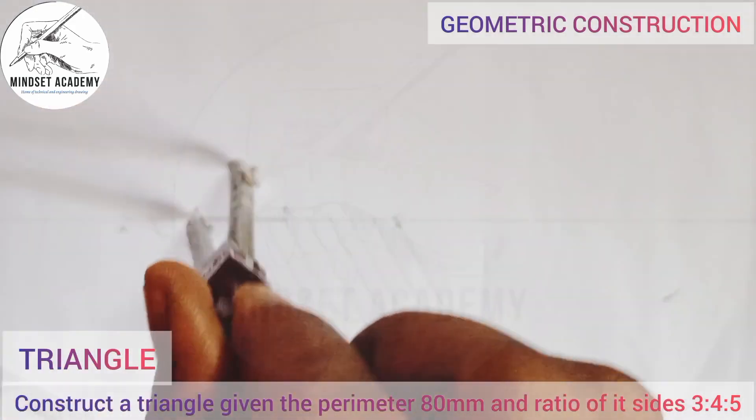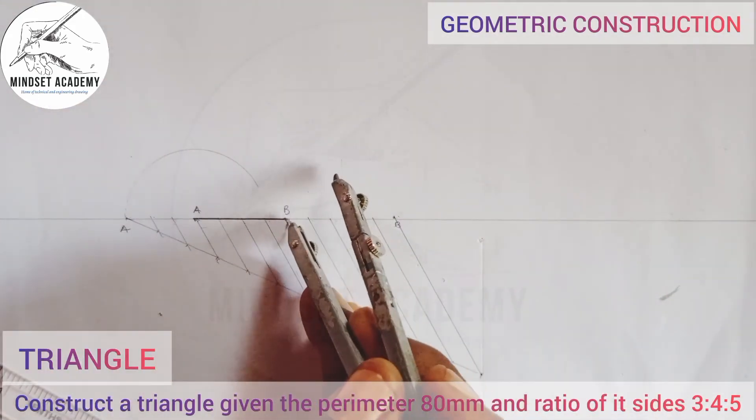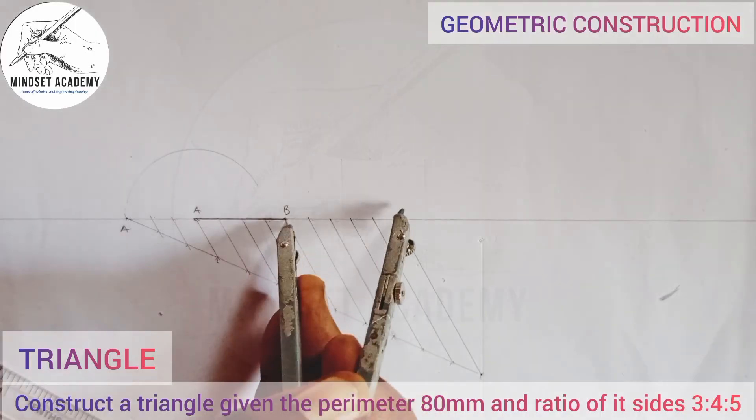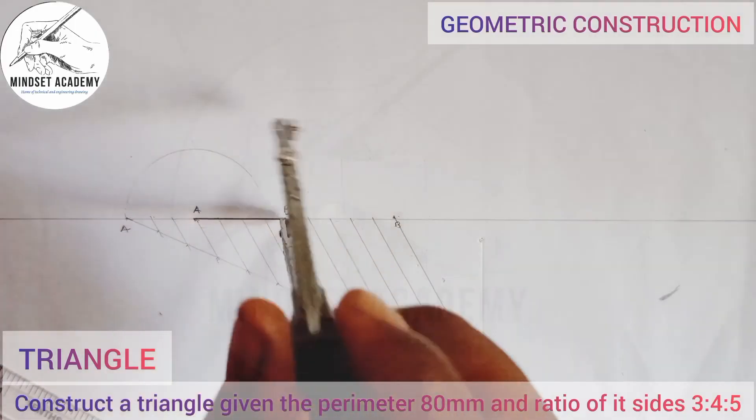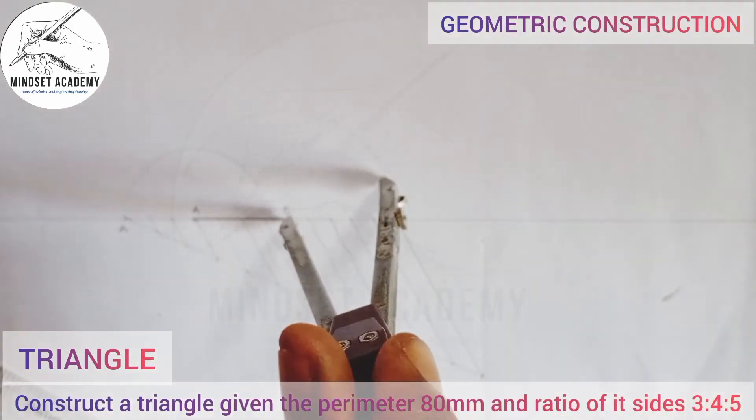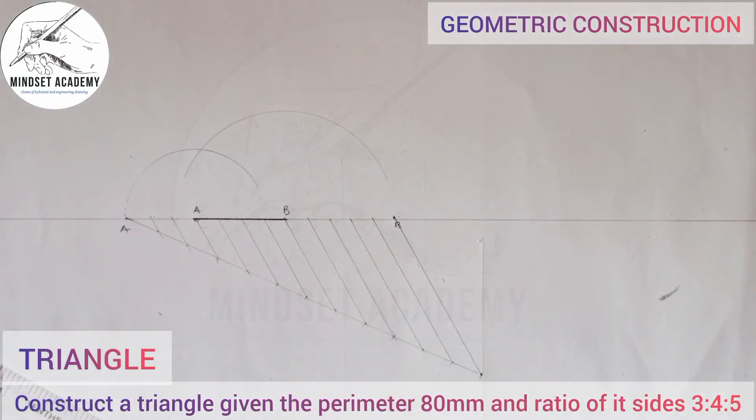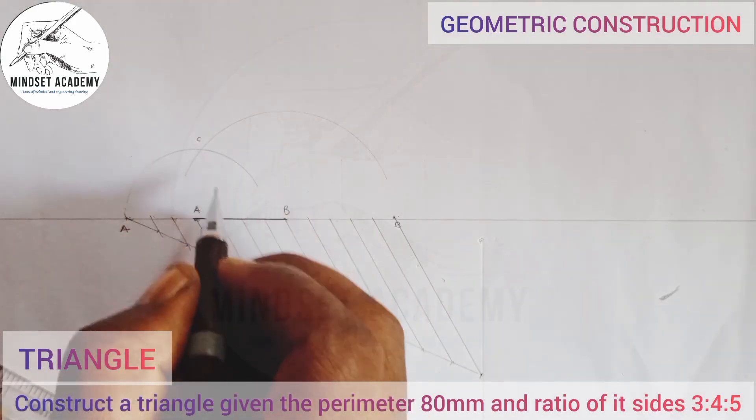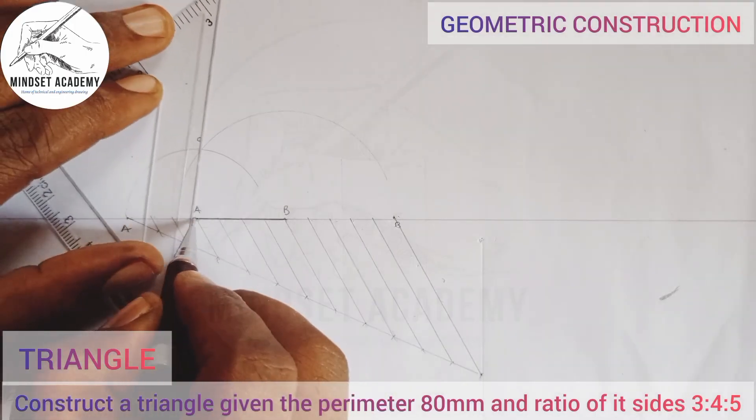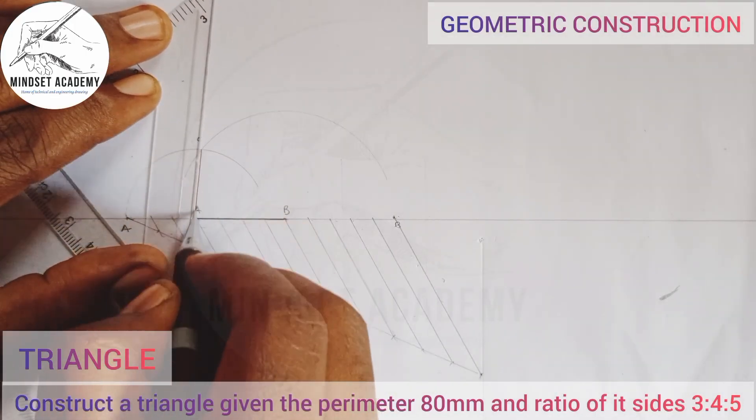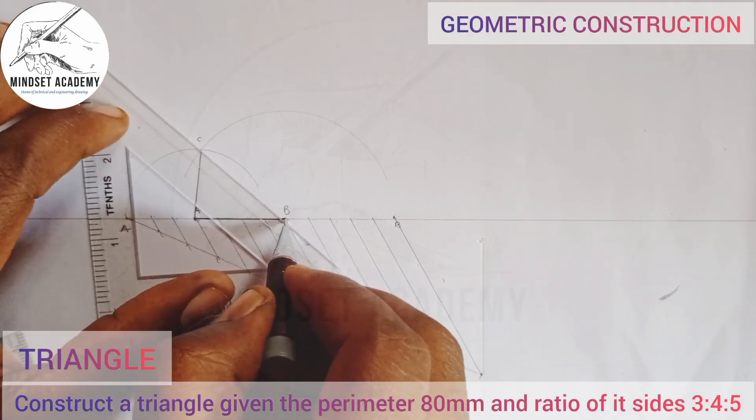From point A here, draw an arc this way. Then come to B and draw the other arc from here. The point where they meet is point C. Just join them together, from A to this point and B to this point.